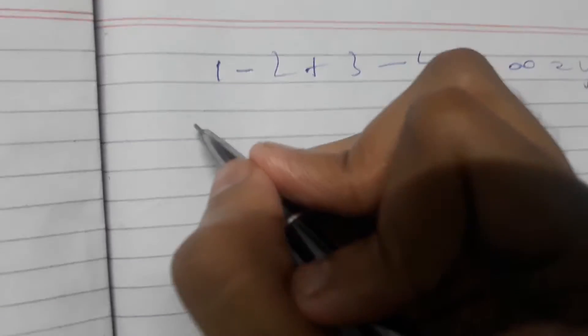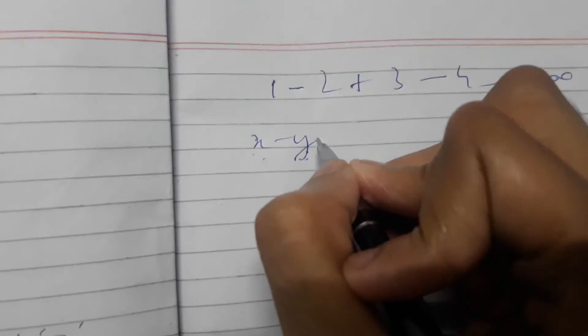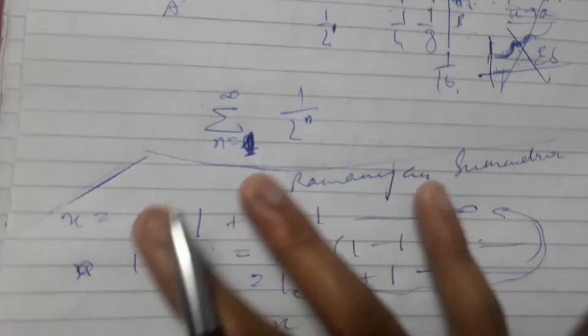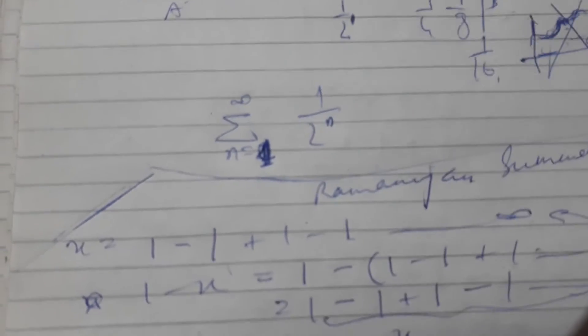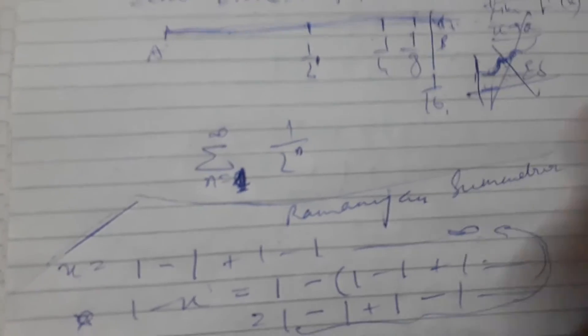Now consider another series: y equals 1 minus 2 plus 3 minus 4, till infinity. Our logic: take x minus y. That's (1 minus 1 plus 1 minus 1 ...) minus (1 minus 2 plus 3 minus 4 ...). Removing the bracket from y gives minus 1 plus 2 minus 3 plus 4 ... Pairing terms: (1 minus 1) plus (minus 1 plus 2) plus (1 minus 3) plus (minus 1 plus 4) and so on.